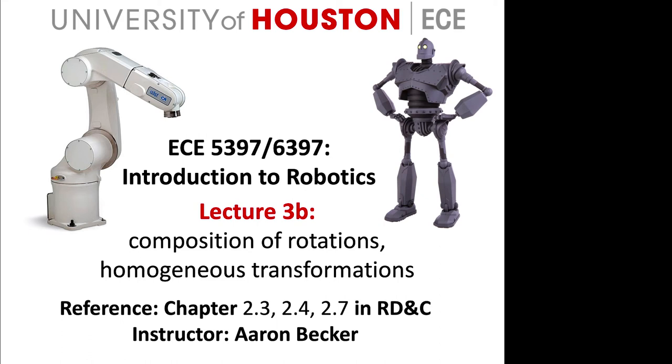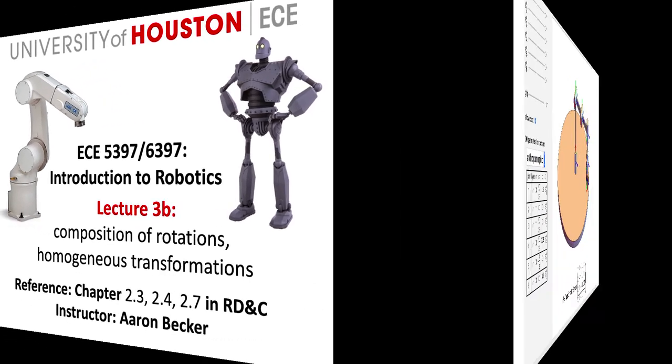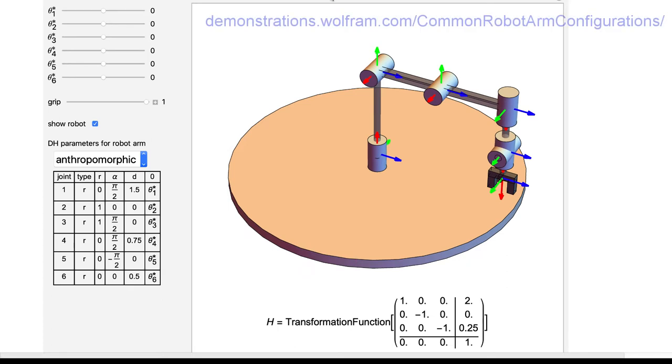Let's continue lecture 3b by focusing on composition of rotations and then we'll do homogeneous transformations. So here we have a schematic of a robot and there are these red, blue, and green coordinate frames attached to every joint.